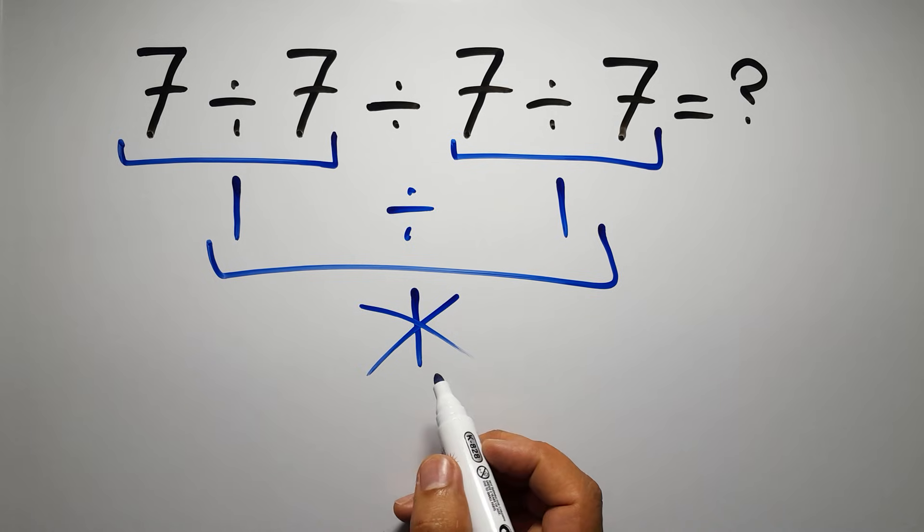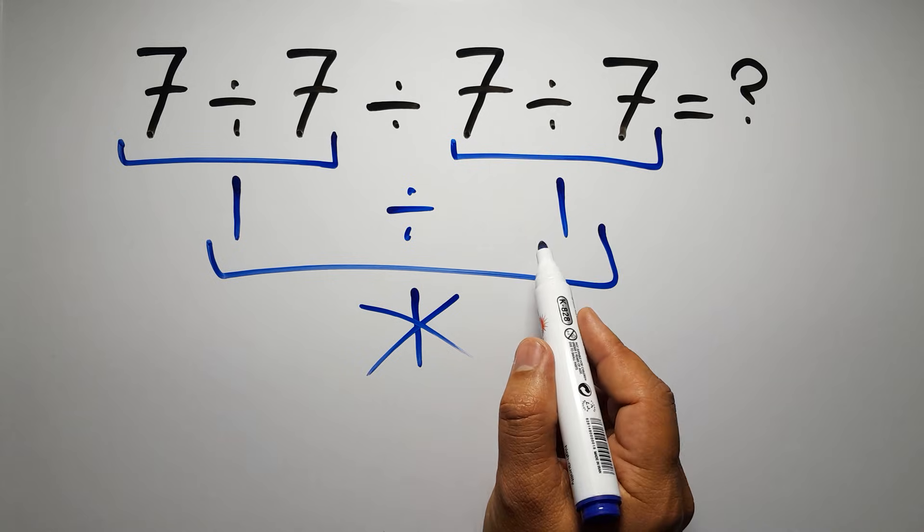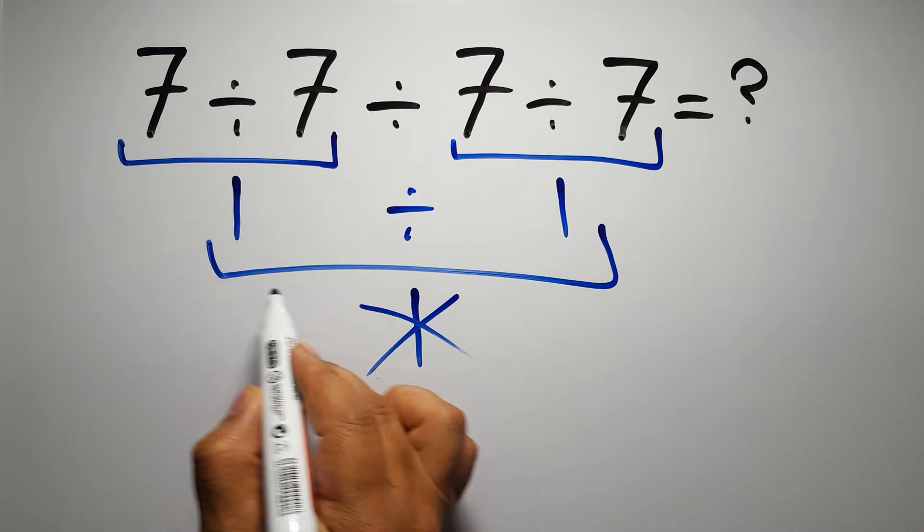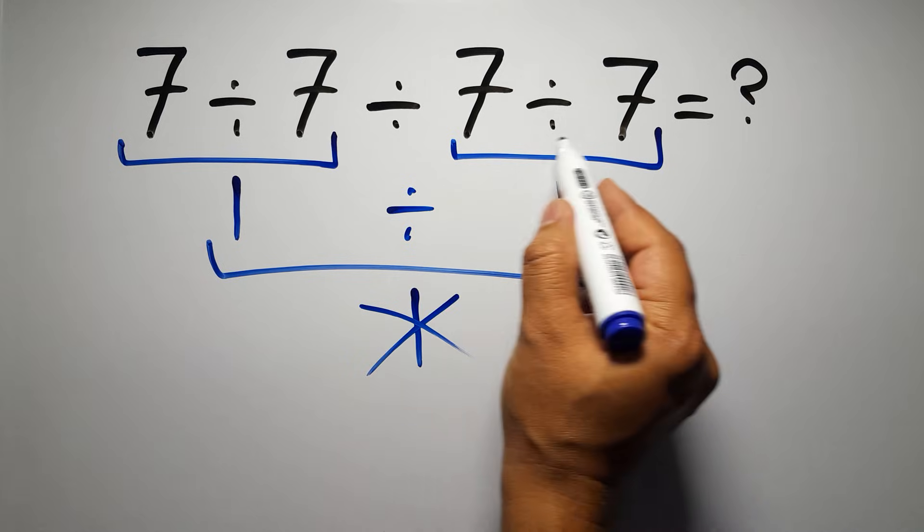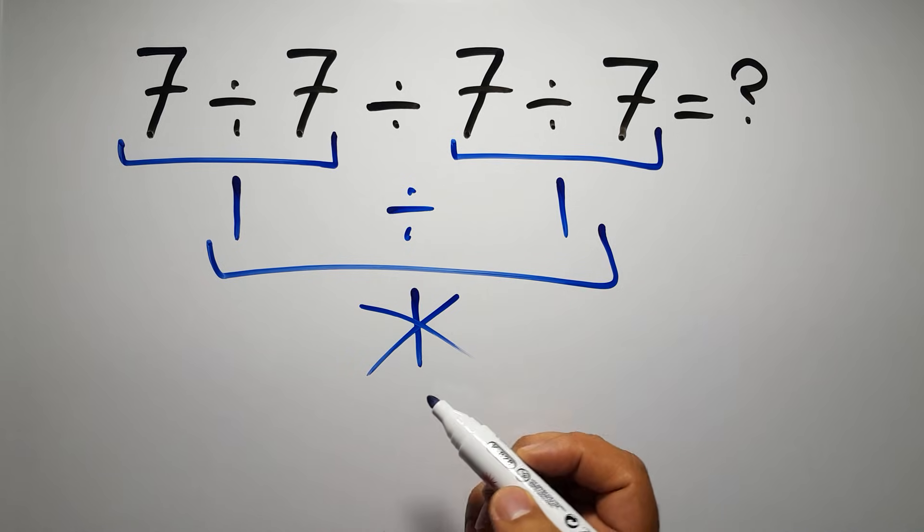Because according to the rule of operations, when we have more than one division in an expression, we have to work from left to right. So here, first we have to do this division, then this division, and finally this division. If we do this division before this division, it is wrong.